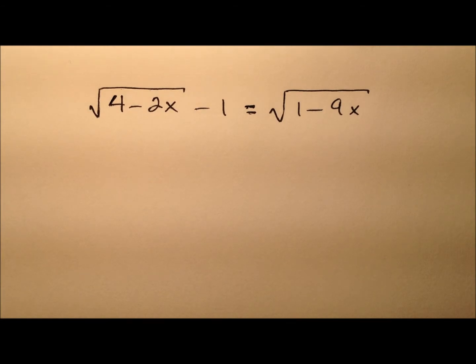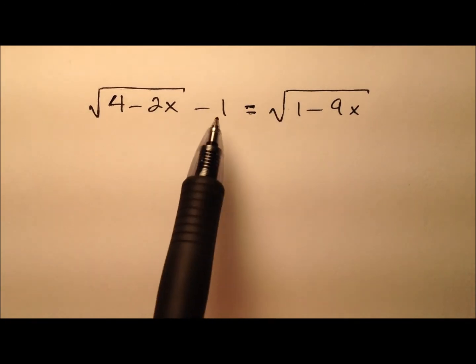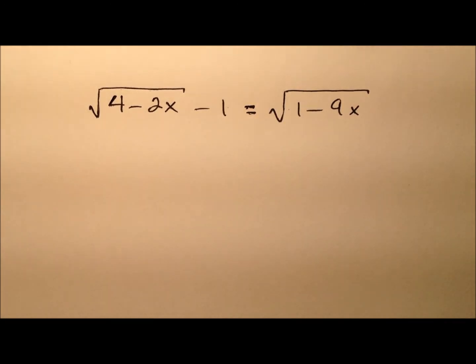In this example, we're going to solve this radical equation. You'll notice there are multiple square root expressions and it includes a term outside as well.